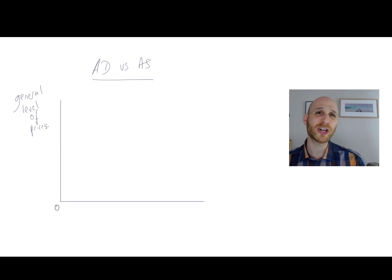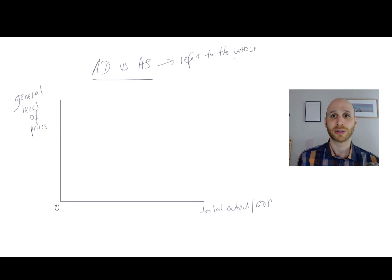And in terms of the quantity side, we're going to have the whole quantity in the economy. So not just what's produced in one market, but what's produced in the whole economy. So we're going to label it this way. Total output or GDP. So one thing to remember is this fact. We're not just looking at a single market, but we're looking at all of the markets in the economy.